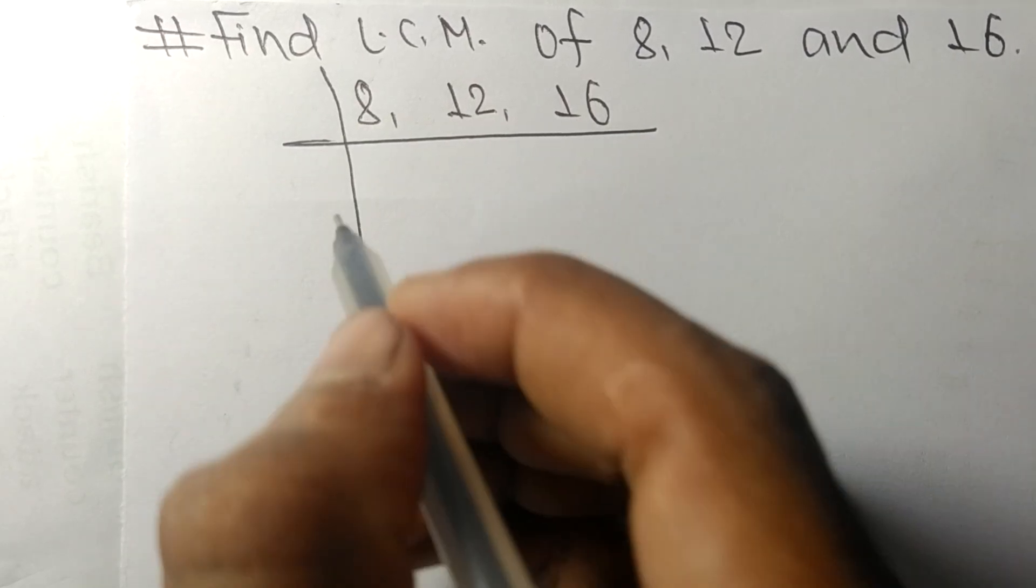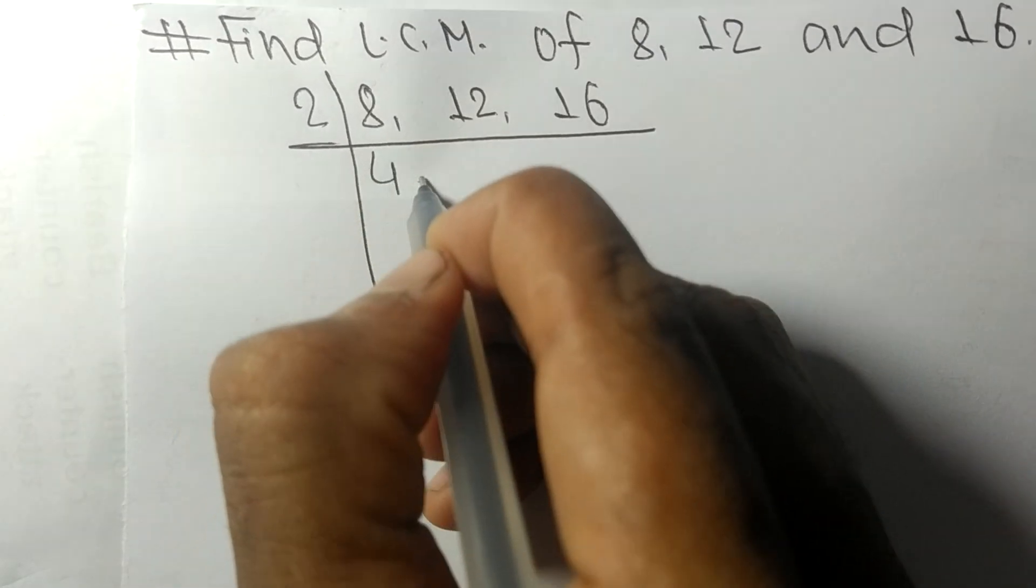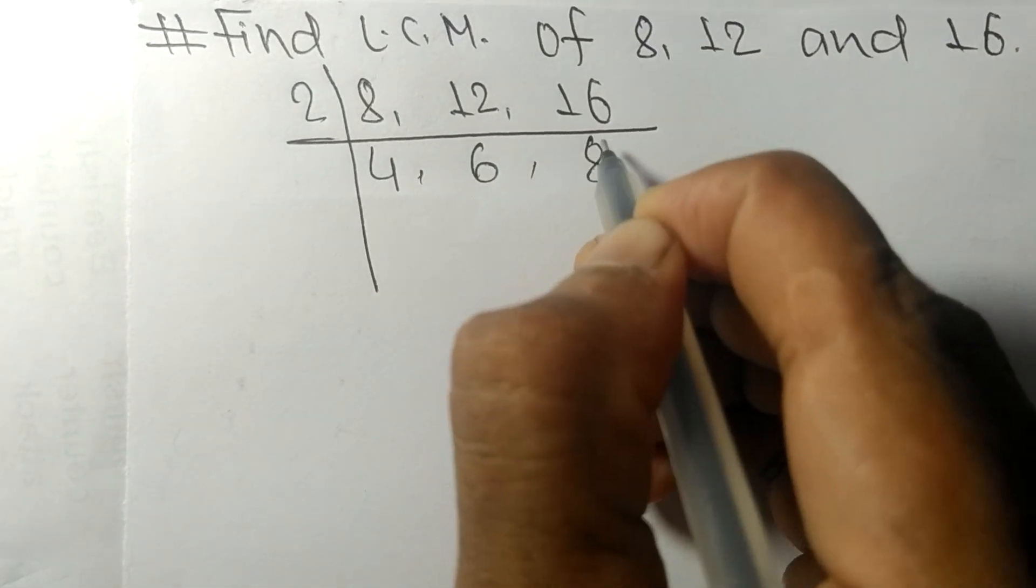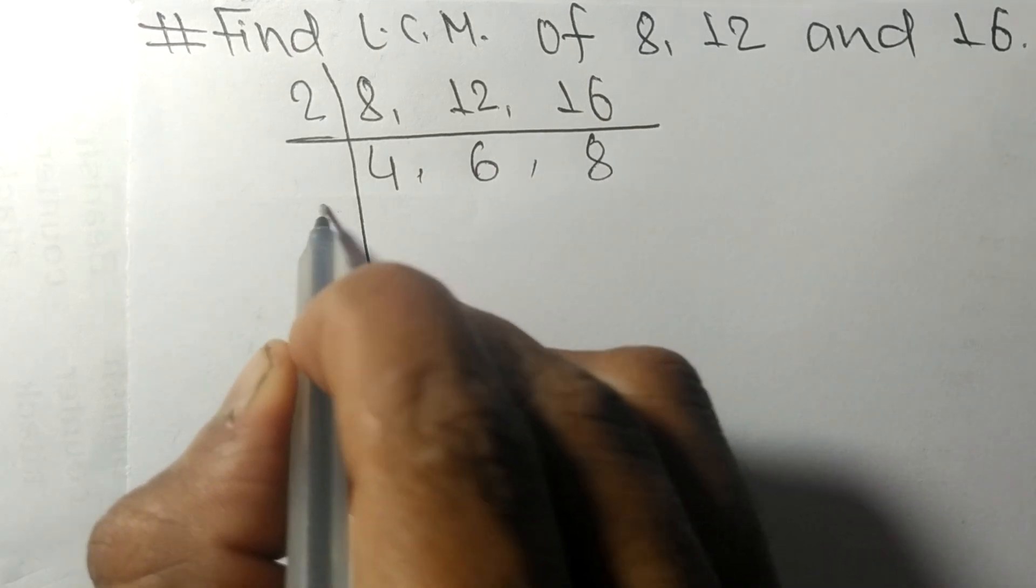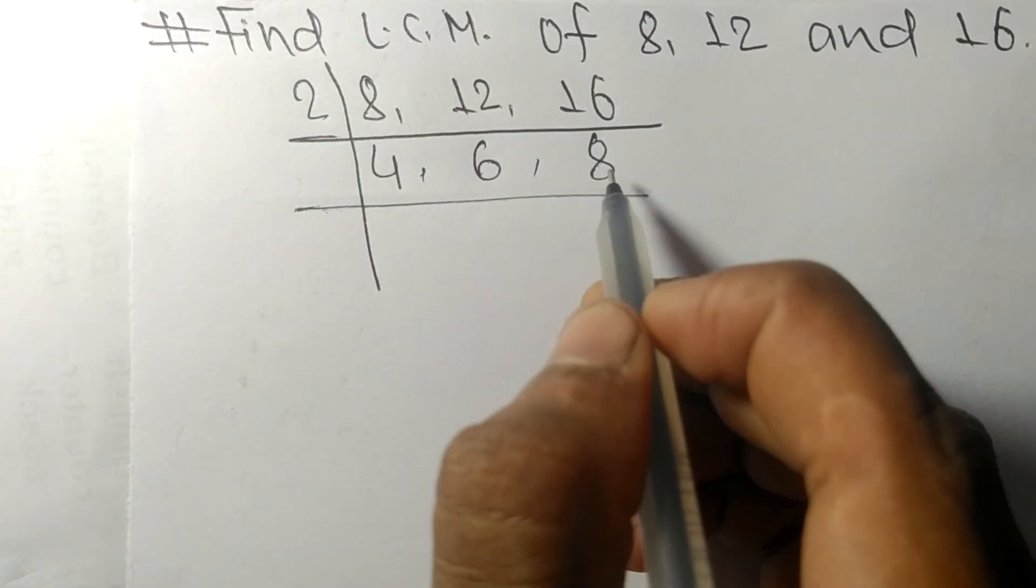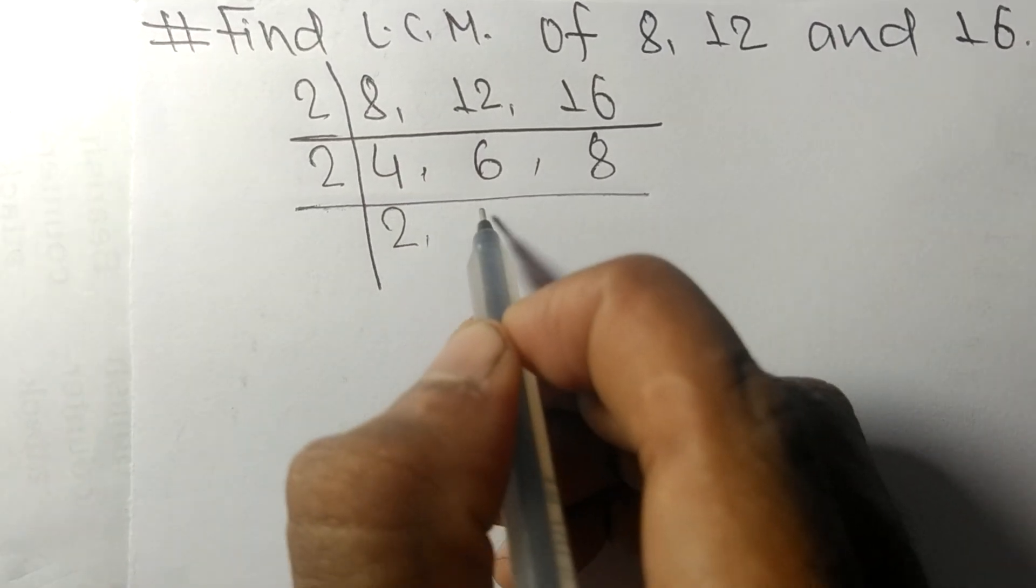These all numbers are divisible by 2. 2 times 4 means 8, 2 times 6 means 12, 2 times 8 means 16. Now 4, 6, and 8 are again divisible by 2. 2 times 2 means 4, 2 times 3 means 6, 2 times 4 means 8.